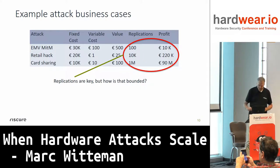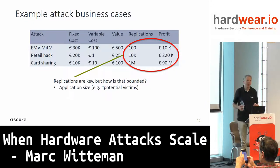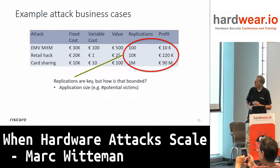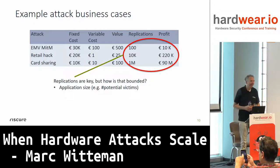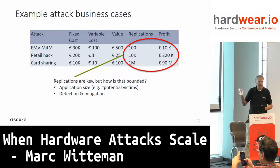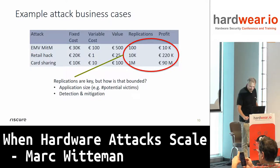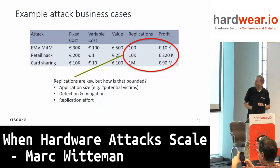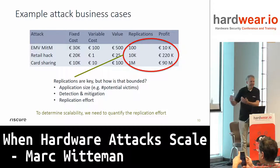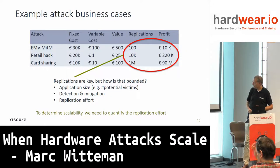How are replications bounded? First, there's the application size — the number of potential victims. Second, detection and mitigation: when an attack is executed, at some point it will be detected and people start mitigating, putting a cap on replications. And third, replication effort: the more difficult to replicate, the harder it is to maintain profit. To determine scalability, which is directly connected to the number of applications, we need to quantify the replication effort.